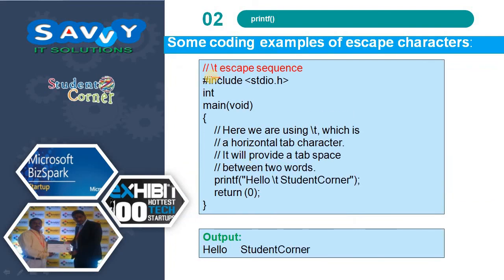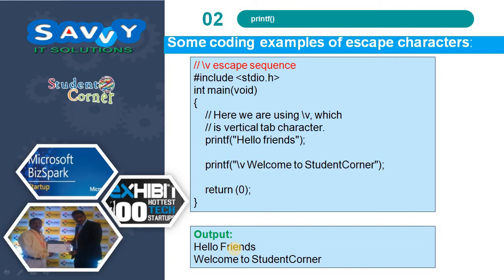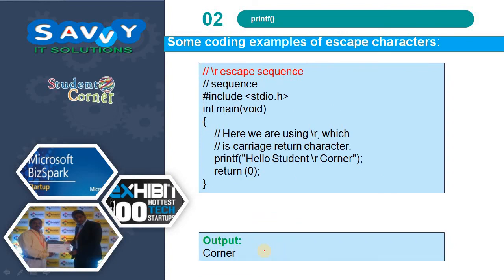For \t, it gives horizontal tab space — some empty space is created between characters. For \v, this is vertical tab space, meaning space is provided vertically downward. For \r, which is carriage return — whatever is printed after \r, the previous content on that line is ignored and only the content after \r will be printed.